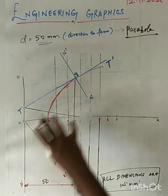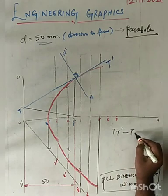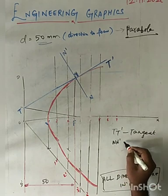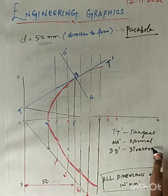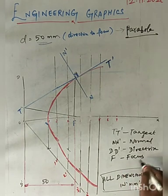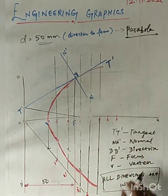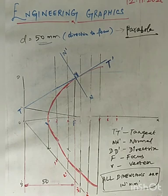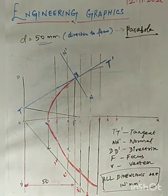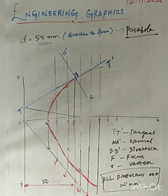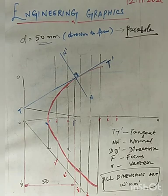In addition, write the labels: TT' for tangential line, NN' for normal line, and DD' for directrix. F is the focus point and V is the vertex point. These are the information we need to give. Below that, mark 'All dimensions are in mm.' My curve may not be exact, but when drawn as per the measurement, the parabola will be very smooth. Hereafter, you know these fundamentals, so practice this diagram well.